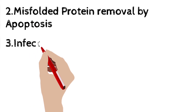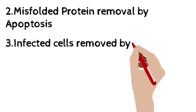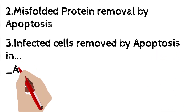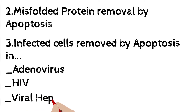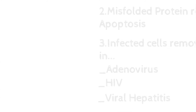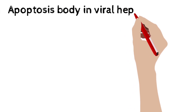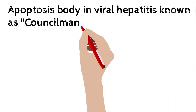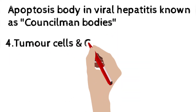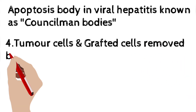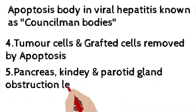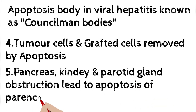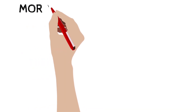Misfolded proteins are also removed by apoptosis. The third example is certain infections where the infected cell is removed by apoptosis — for example, adenovirus infection, HIV infection, and viral hepatitis. In viral hepatitis, the apoptotic bodies are given a special name known as Councilman bodies. Tumor cells and grafted cells are also removed by apoptosis. If there is obstruction in the pancreas, kidney, or parotid gland, the remaining parenchymal cells can also be removed by apoptosis.